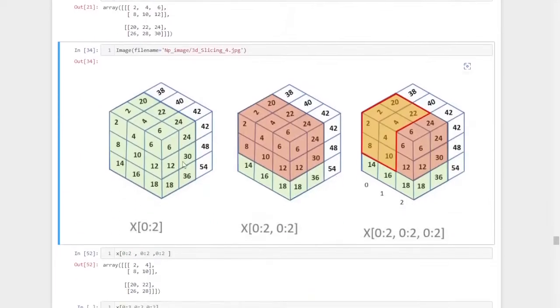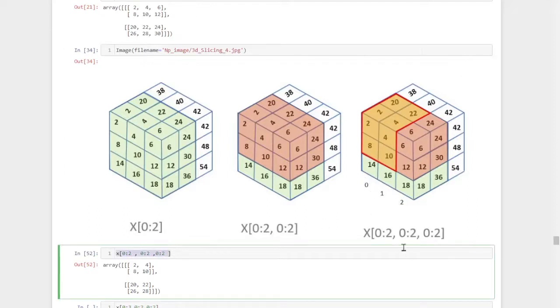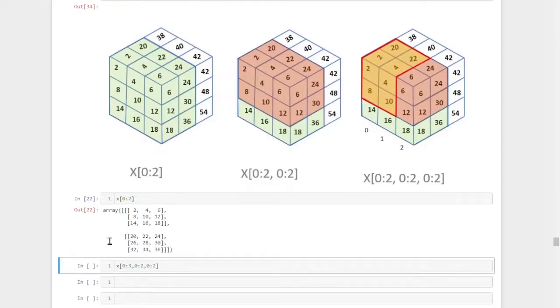Then next, we trimmed first the layer, then we trimmed out the rows here. Now we need to trim the columns in this direction. So we will exactly get 2, 4, 8, 10 and 20, 22, 26 and 28. For that again, the columns start from position 0, position 1 and position 2. So again comma, then we give the values of the columns we need to trim out. So we start again, 0 to 2. So we got 2 layers now here.